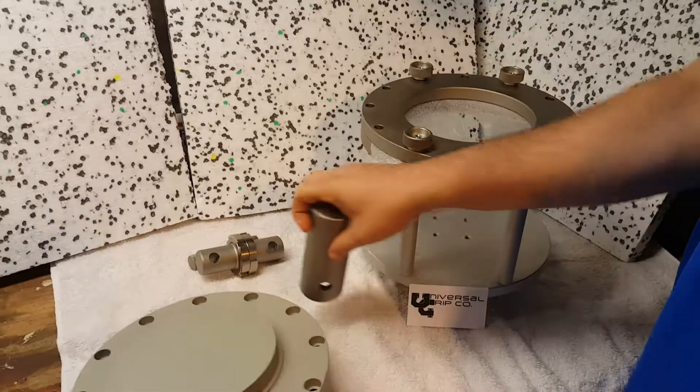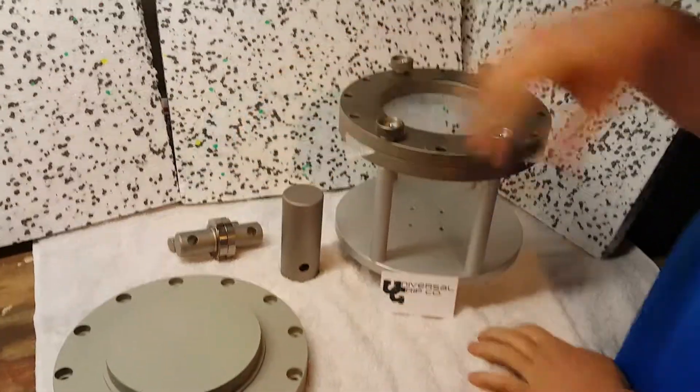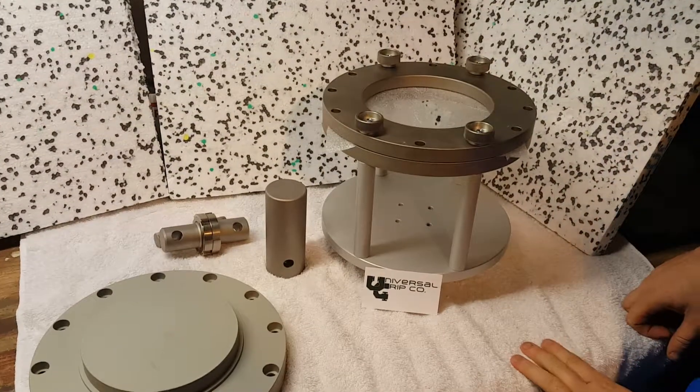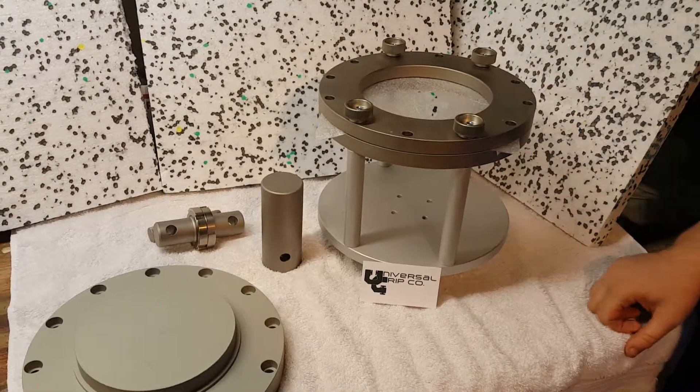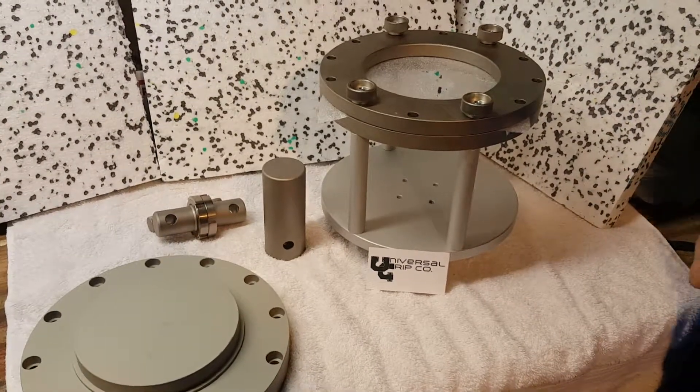So again, this is the ASTM D6241 puncture fixture for geomembranes and geotextiles. If you have any questions, you can visit us at UniversalGripCo.com. Thanks for watching.